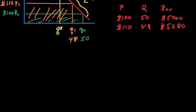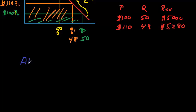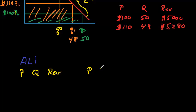Let's leave that there so we can see those original revenue numbers. So we have airline one with their price, quantity, and revenue at different price levels, and then for airline two the same thing: price, quantity, and revenue.